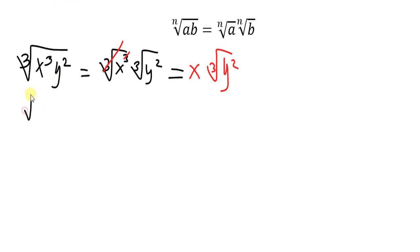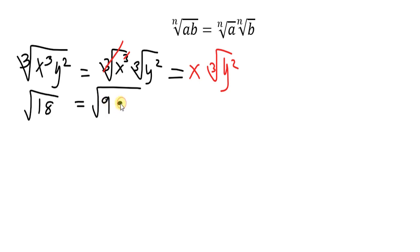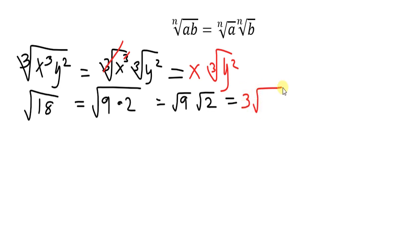Another example: the square root of 18. Since 18 is not a perfect square, we find two factors whose product is 18, where one factor is a perfect square. The perfect squares are 1, 4, 9, 16, 25. The factor of 18 that is a perfect square is 9, and 9 times 2 is 18. So we write it as the square root of 9 times the square root of 2. The square root of 9 is 3, because 3 times 3 is 9. So the answer is 3 times the square root of 2.